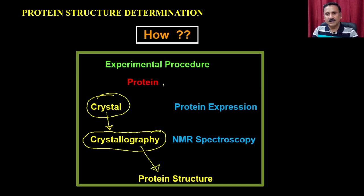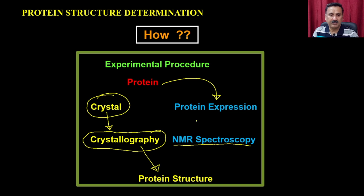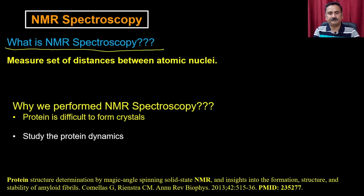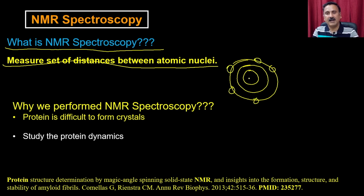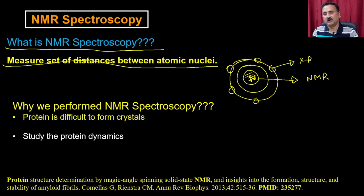Now let's move on to the second approach, which is the protein structure solution by NMR spectroscopy. NMR spectroscopy measures the set of distances between the atomic nuclei. There is a clear cut difference between X-ray crystallography and NMR spectroscopy. If you see the atom, you are going to have the electrons on the periphery and the nucleus in the center. If you are actually going to study the nucleus, then it is called NMR spectroscopy. If you are going to study the electrons, then you use X-ray crystallography, because X-ray has a wavelength that is going to hit the electrons, whereas in NMR you are actually going to study the nucleus.